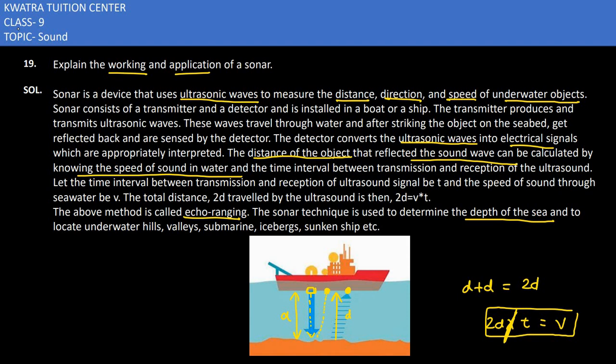We can determine the depth of the sea and locate underwater hills, valleys, submarines, icebergs, and sunken ships. Sometimes ships sink in water, so what they can use is ultrasonic waves to know whether the sunken ship is there or not, with the help of ultrasonic waves.